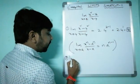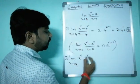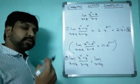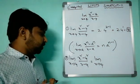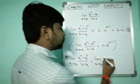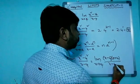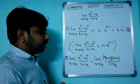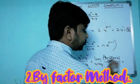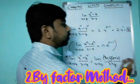The second way: limit x tends to 4, (x² - 4²) / (x - 4). Using the algebraic identity a² - b² = (a - b)(a + b), we get (x - 4)(x + 4) / (x - 4). The (x - 4) terms cancel, giving x + 4. Substituting x = 4 gives 4 + 4 = 8, the same answer.